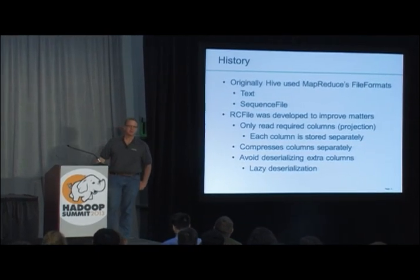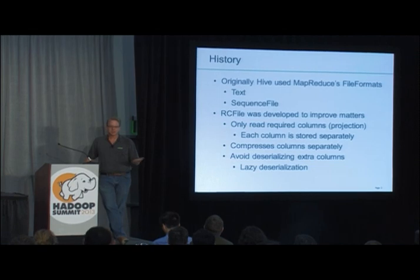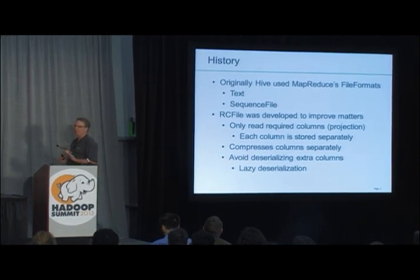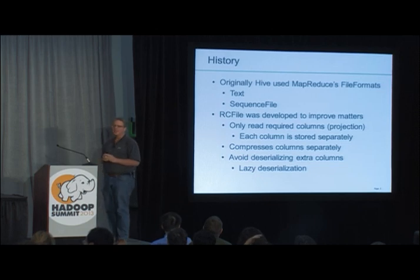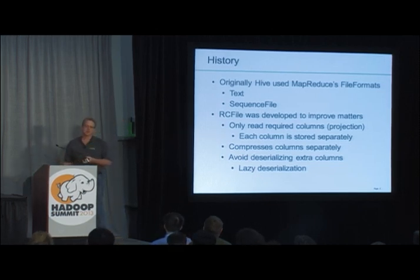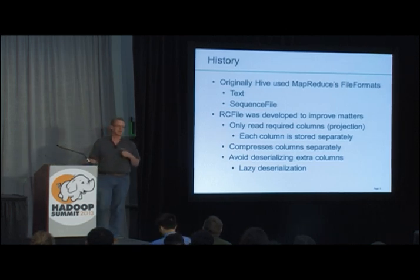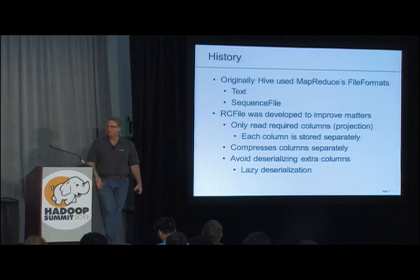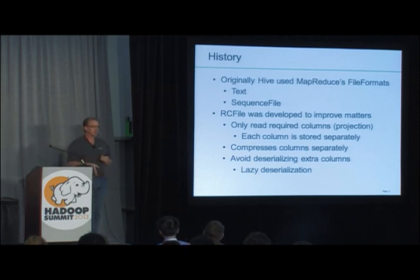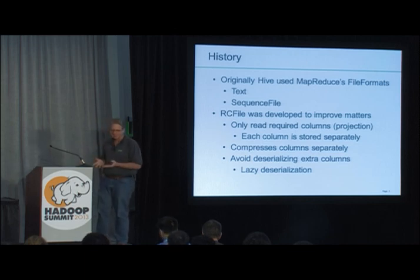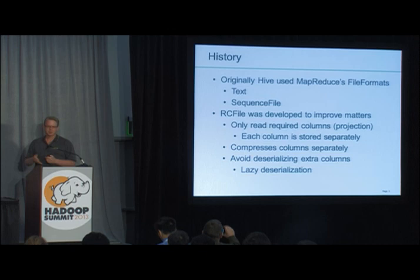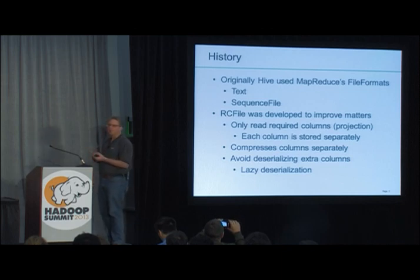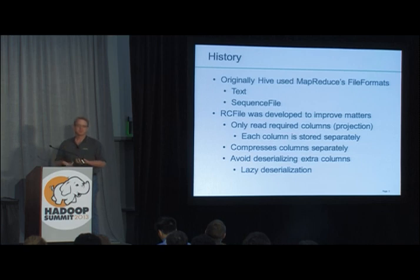So the history of storage in Hive. Originally, we had text and sequence files because those came from MapReduce. They worked, but had some unfortunate properties. Even if you only needed one column out of the data, you had to load up the whole thing. To fix that, Facebook came up with RC file, which did a really good job — treating each column as a separate piece and storing them together, so you could read just the bytes needed for a column.